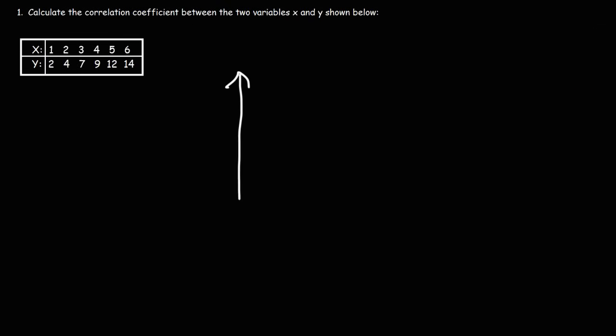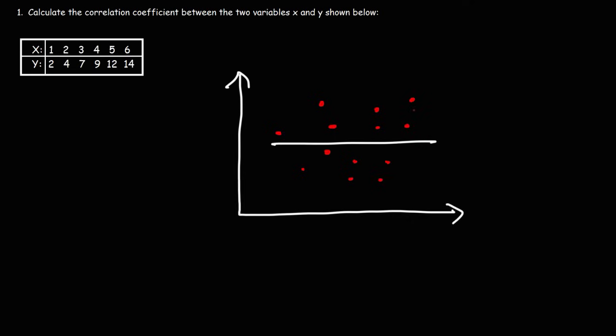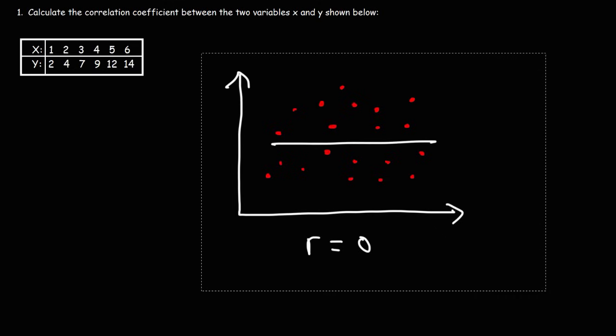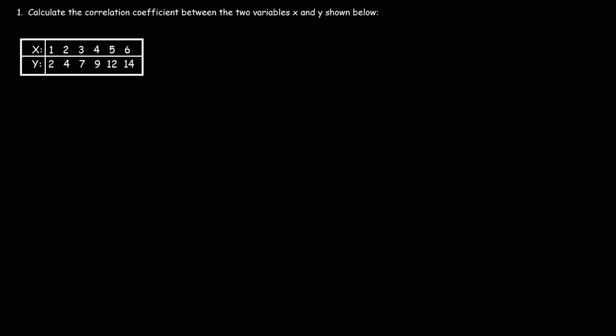Sometimes there won't be any correlation. If you have just random points everywhere, r could be very close to zero. The correlation coefficient really tells us the strength of the linear relationship between two variables. If two variables have no linear relationship, r is going to be close to zero. If there is a strong linear relationship, r is going to be close to either positive one or negative one, depending on the slope of the line.